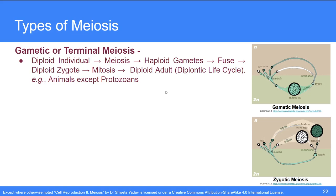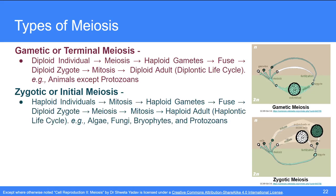The next type is zygotic or initial meiosis. In this kind, a haploid individual forms haploid gametes by mitosis. These haploid gametes fuse and form a diploid zygote which undergoes meiosis followed by a mitotic division to form a haploid adult. This life cycle is known as haplontic because the adult is haploid and shows zygotic meiosis. This kind is found in different algae, fungi, bryophytes, and protozoans.